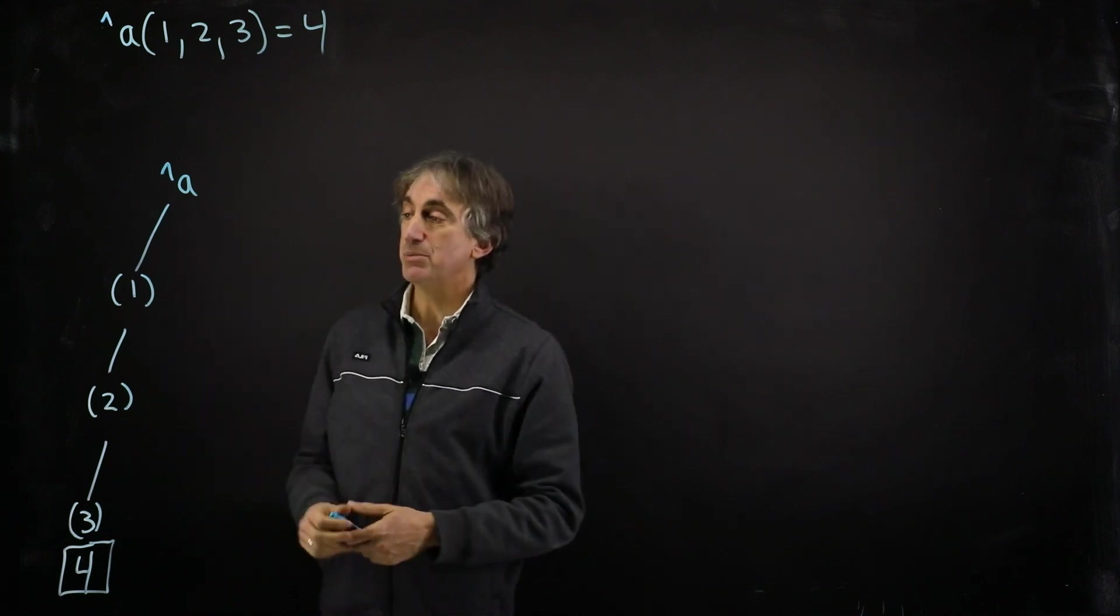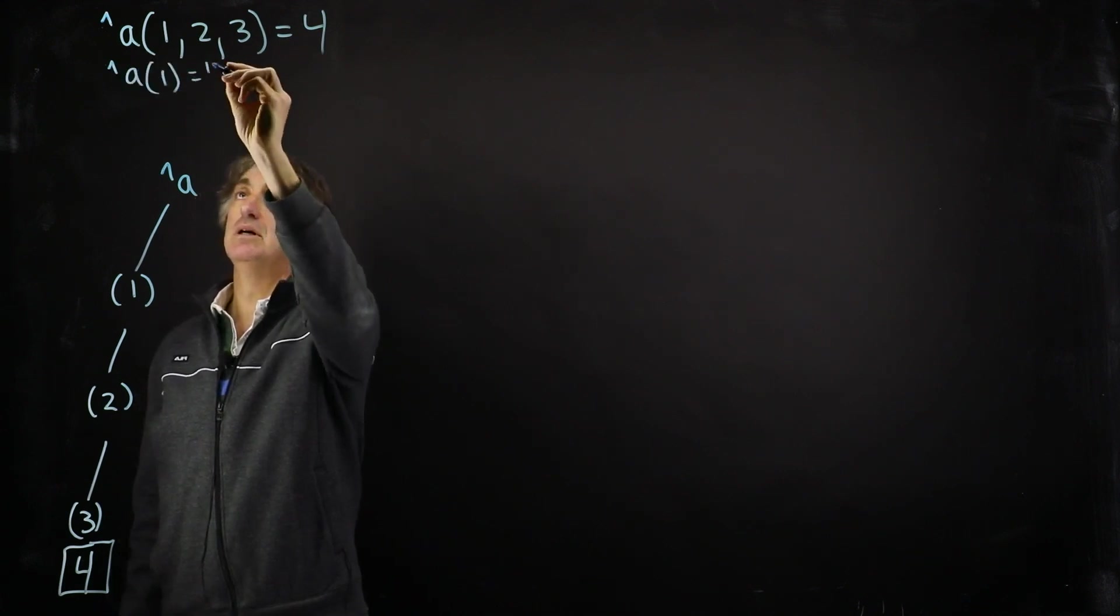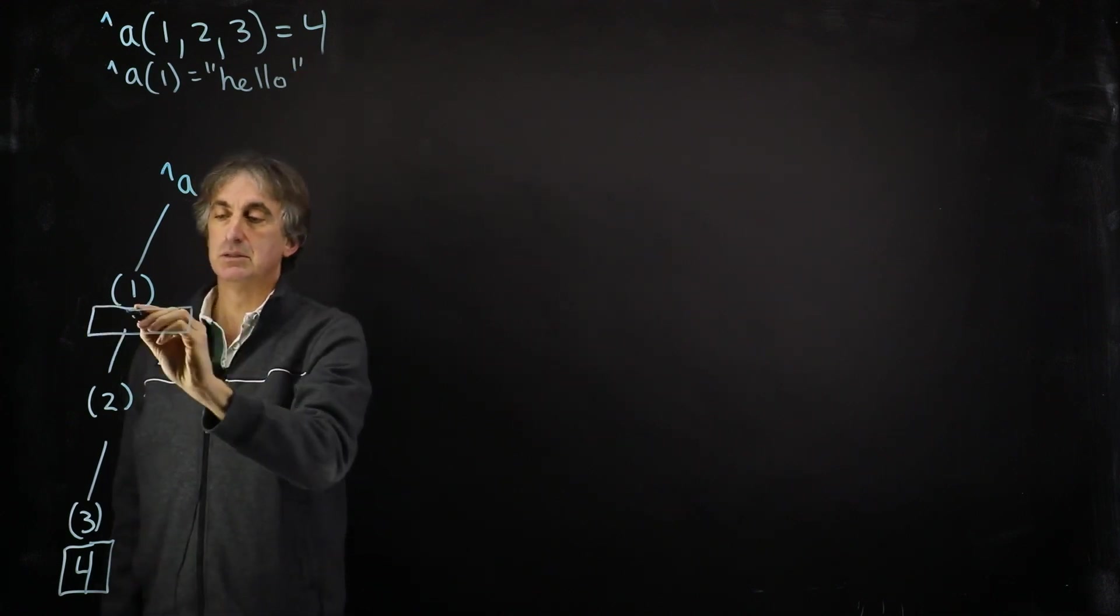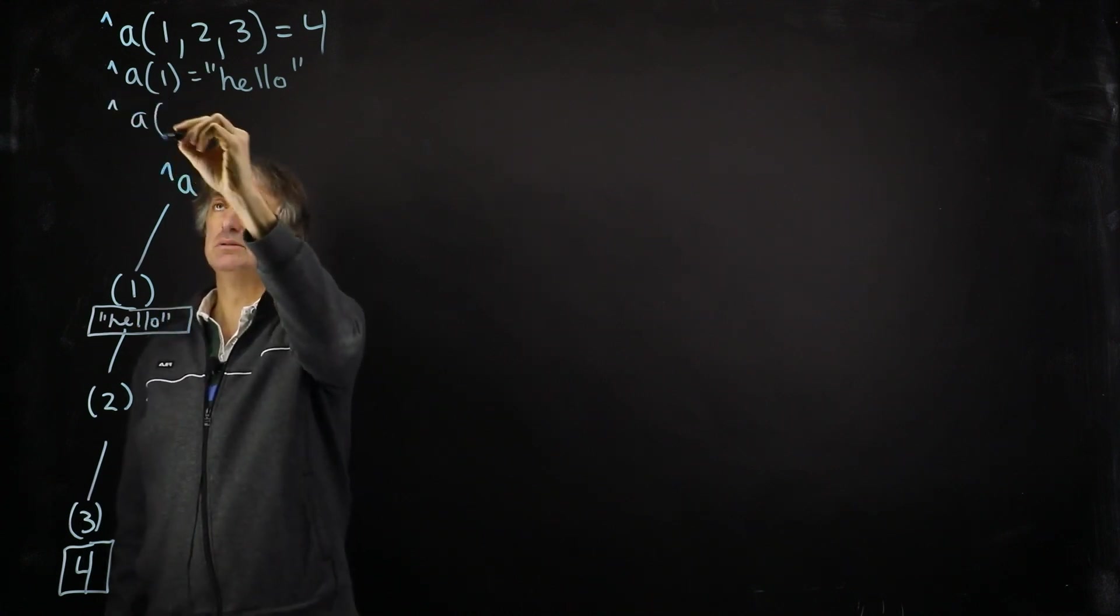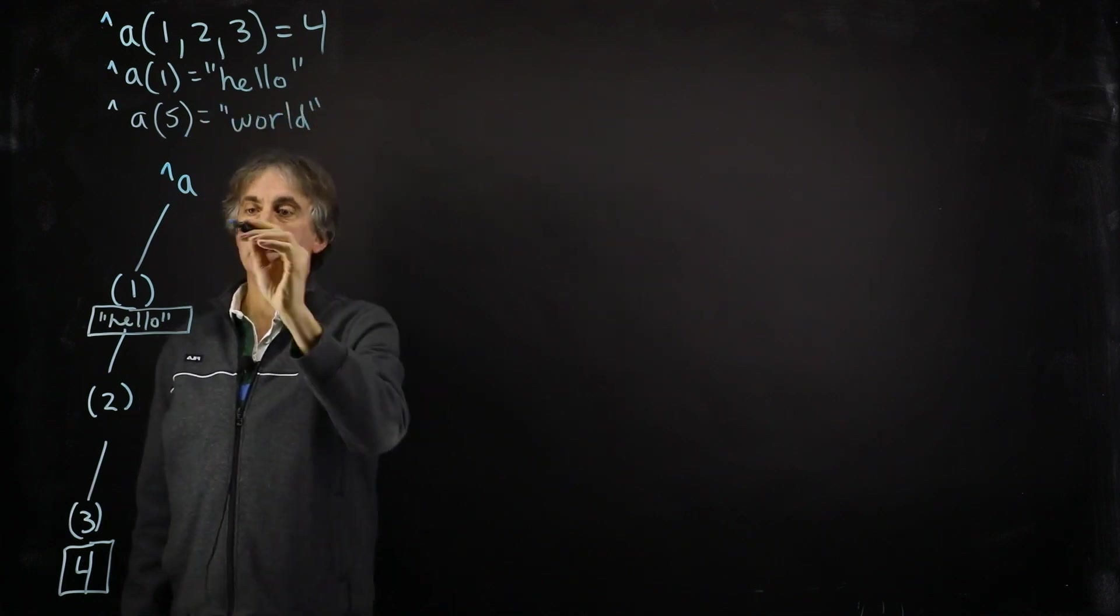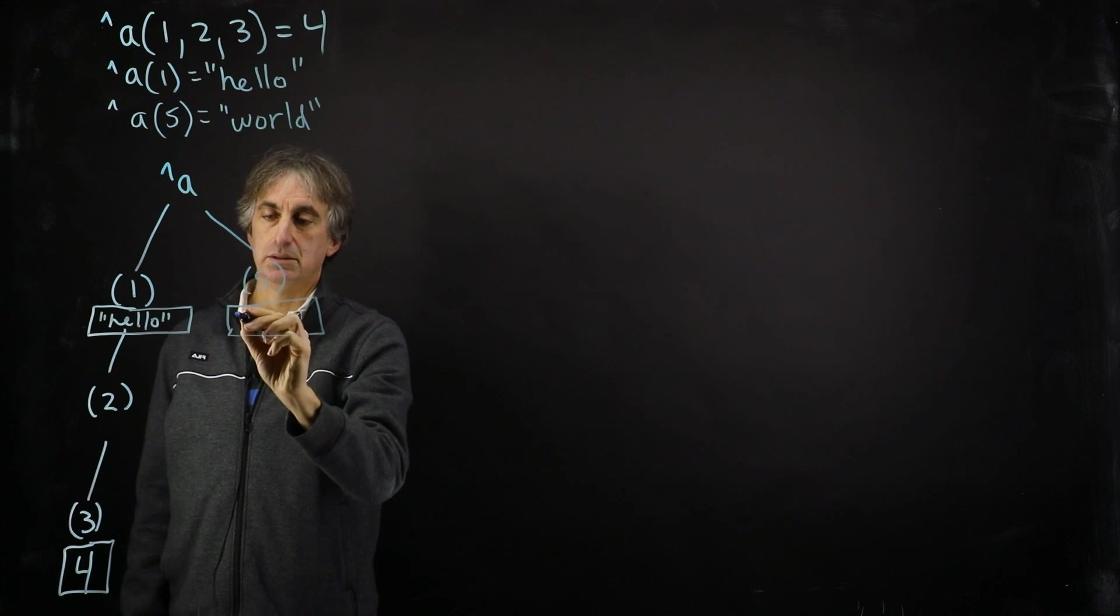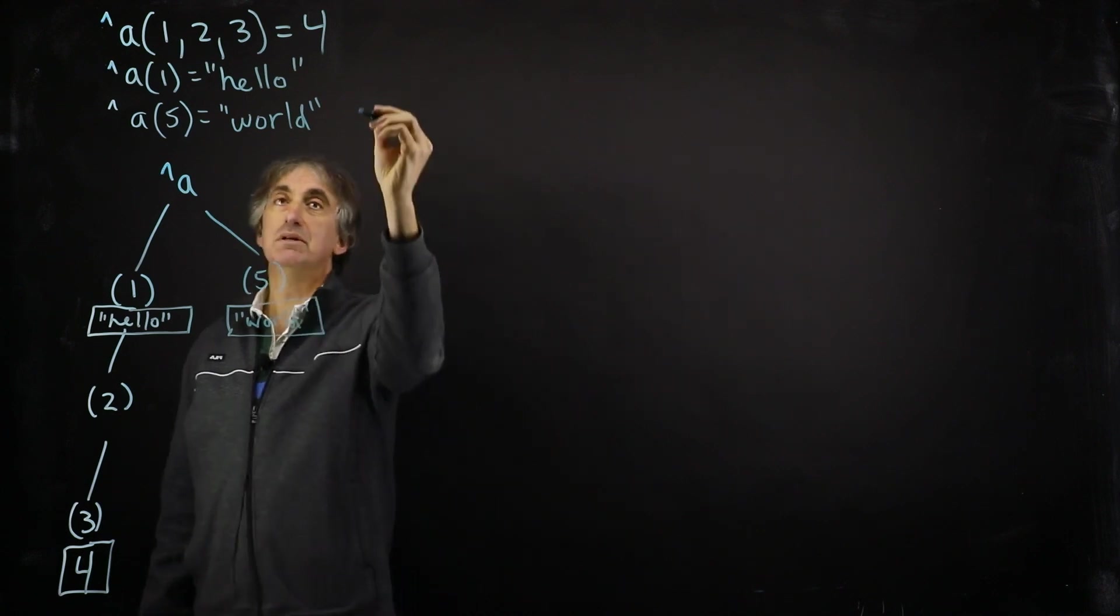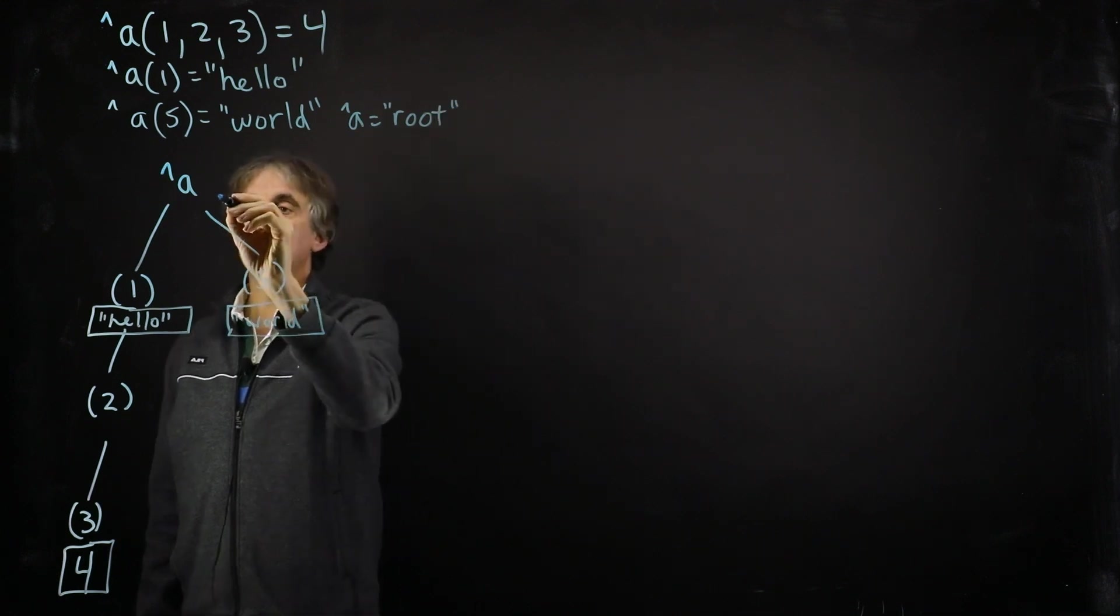But we can continue to manipulate this global, so we can give an already existing node some value. And that would go here. We can add a new node. And that would go here. And if we want, we can give the root a value. And that would go over here.